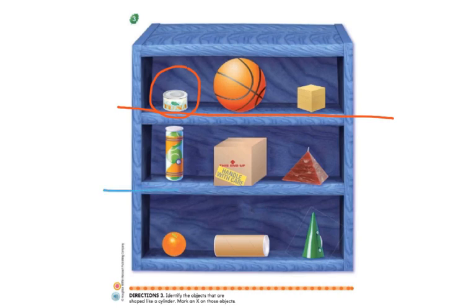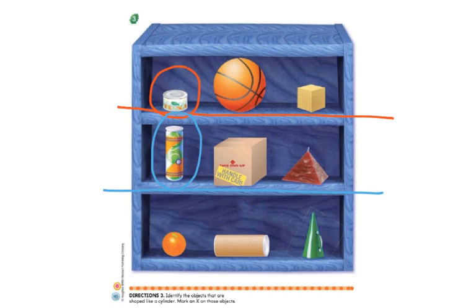Let's move to the middle row. Our first object is a can with tennis balls inside. Is it a cylinder? Yes, it is — it has those two flat surfaces and a curve, just like a can. The middle one looks like a cardboard box. Is that a cylinder? Nope, it's a cube. And the last one looks like a little candle — it has flat surfaces but does not have curves, so it's not a cylinder. It's a pyramid.